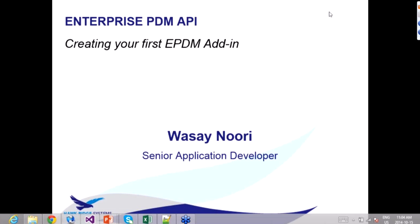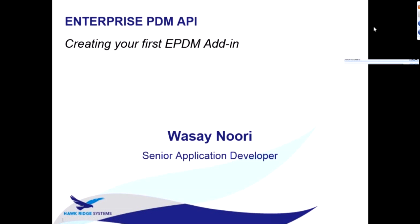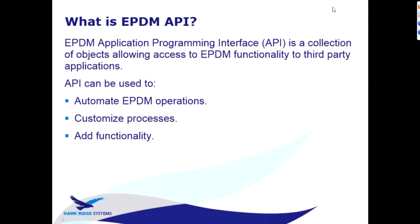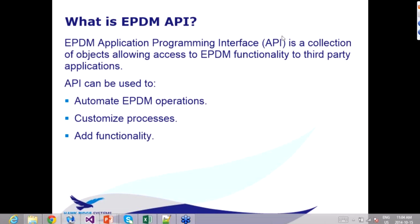What we're going to do today is go over introducing Enterprise PDM API and walk through your very first application. Enterprise PDM API is a collection of objects that allow access to EPDM functionality for third-party applications. It allows you to automate processes, customize processes, automate operations, add functionality, and get information from the vault. Almost everything you can do in the PDM UI is available in the API.